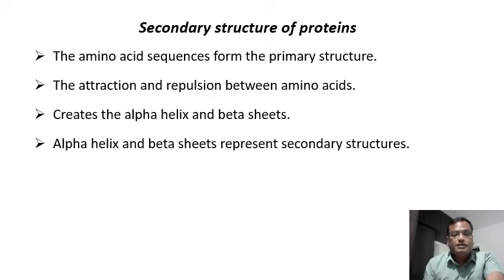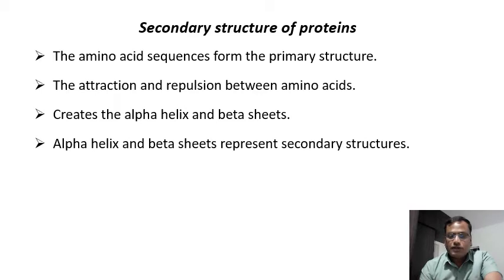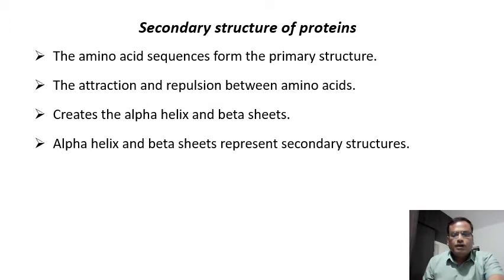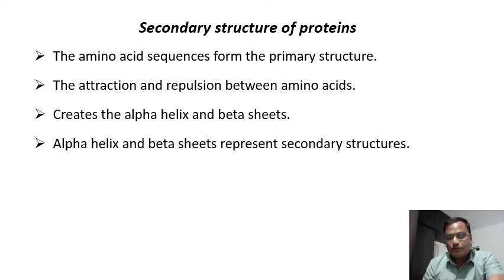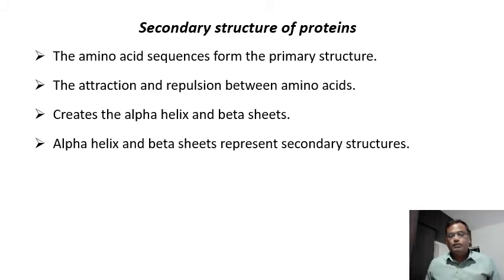Now let us understand what the secondary structure is. Different amino acids have different types of properties — some are positively charged, some are negatively charged, and some are neutral. Because of this difference in properties, amino acids either attract or repel each other. This interaction — attraction, repulsion, etc. — results in the formation of the secondary and tertiary structure of the protein.